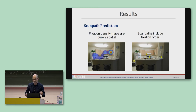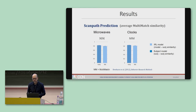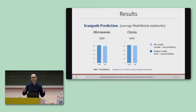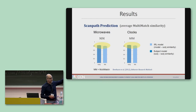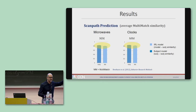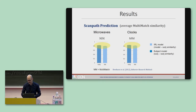Fixation density maps, however, are purely spatial, but search fixations are also made over time, ultimately producing a scan path. Because our model also makes sequences of fixations, we were able to compare its scan paths to those of our subjects. Based on average multi-match similarity, the model did a pretty good job — predicting scan paths is not the easiest thing to do, so this may be one of the more impressive results.